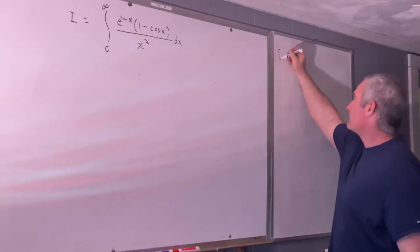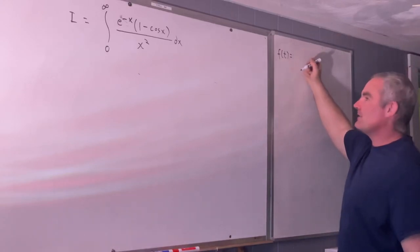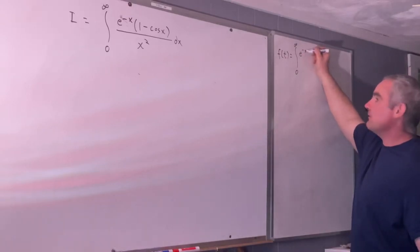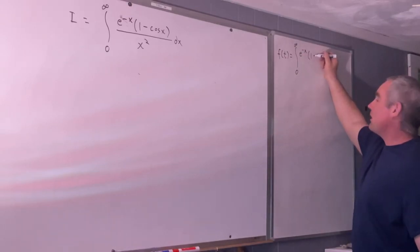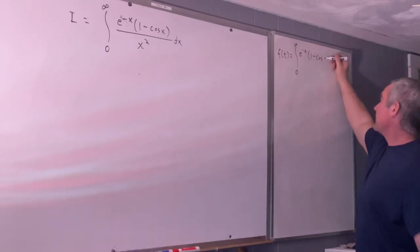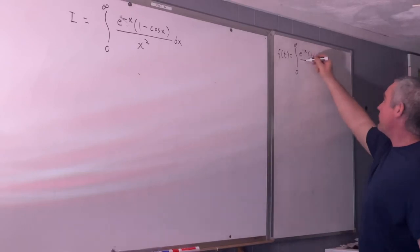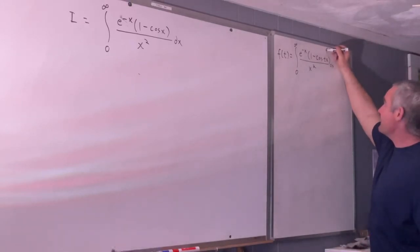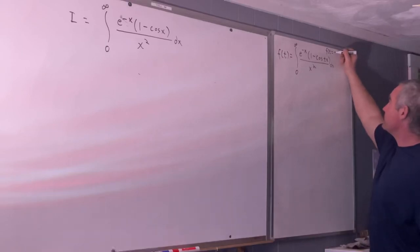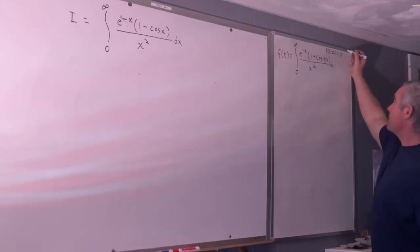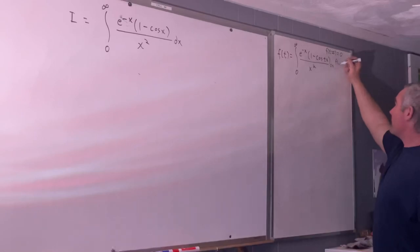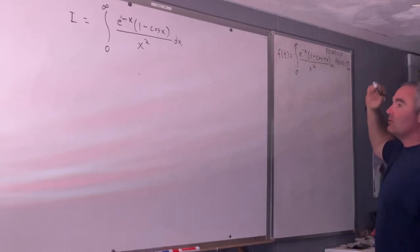We're going to create a function of t represented as an integral: f(t) equals the integral from 0 to infinity of e to the negative x times (1 minus cosine of tx) over x squared dx. We note that if we evaluate f(t) at t equals 0, we get 0 because cosine of 0 is 1, and 1 minus 1 is 0. And if we evaluate f(t) at t equals 1, we recover our original integral, which we've called i.